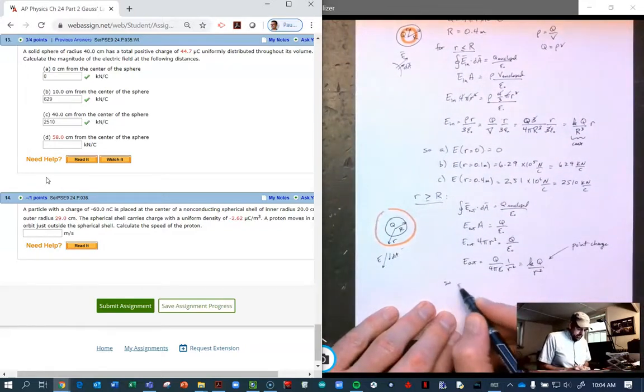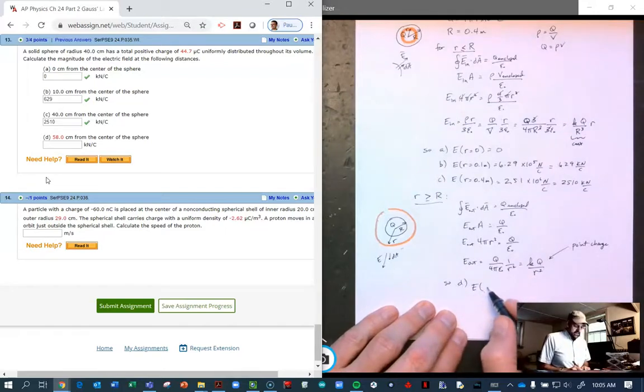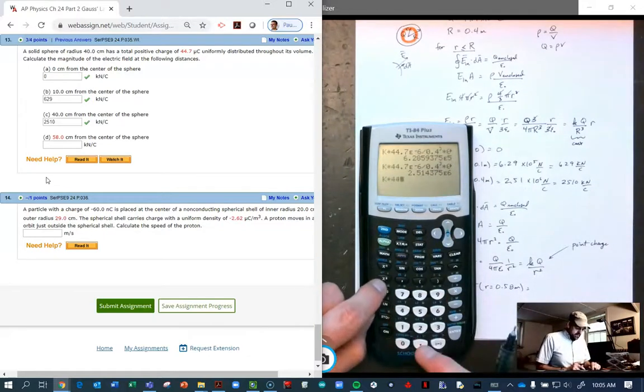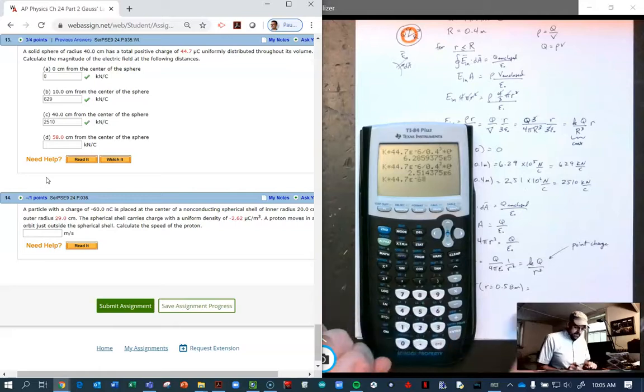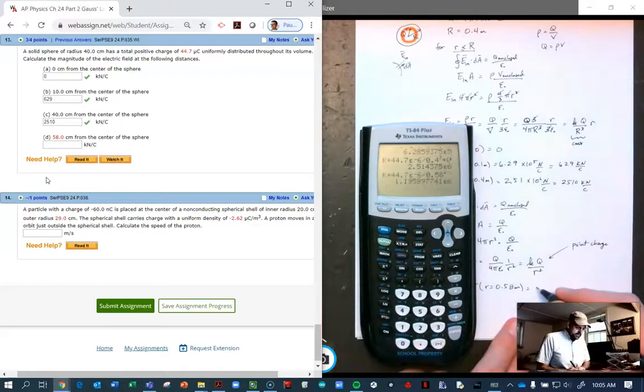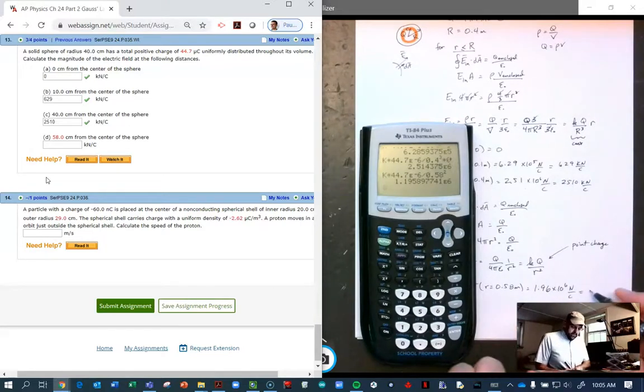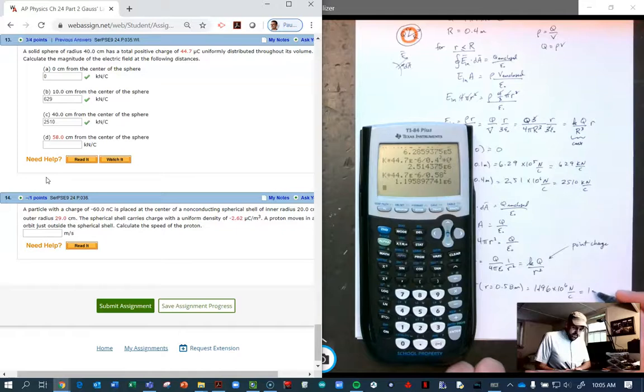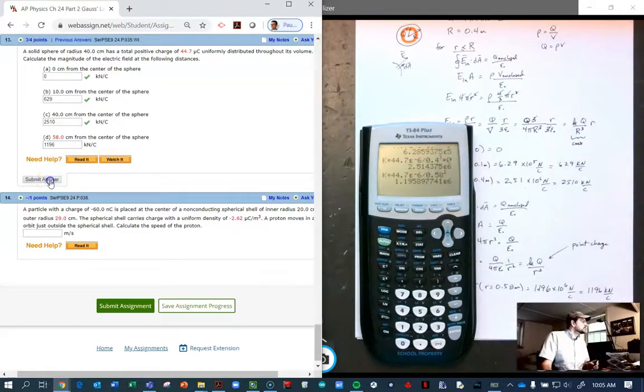And so for part D, what is the electric field for me when R is 58 centimeters? Here I'm going to take my K and multiply it by my Q, 44.7 microcoulombs. And now we're going to divide by the radius squared, and my radius is 0.58 squared. 1.196 times 10 to the 6 newtons per coulomb, which is 1196 kilonewtons per coulomb. All right, on to the last problem.